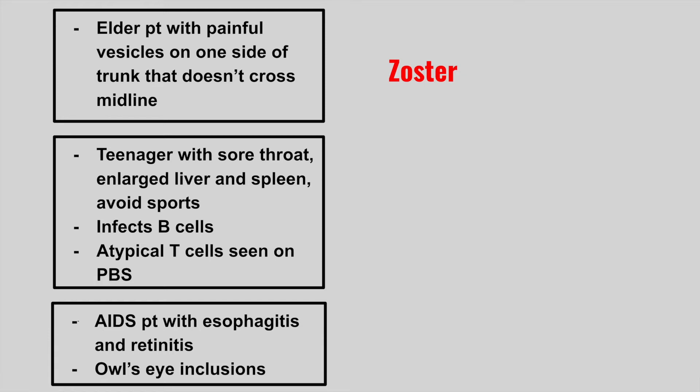The next patient is going to be a teenager with sore throat and enlarged liver and spleen. We tell them to avoid sports. This virus is going to infect the B cells, but we see atypical T cells on the peripheral blood smear. This is EBV causing infective mononucleosis.